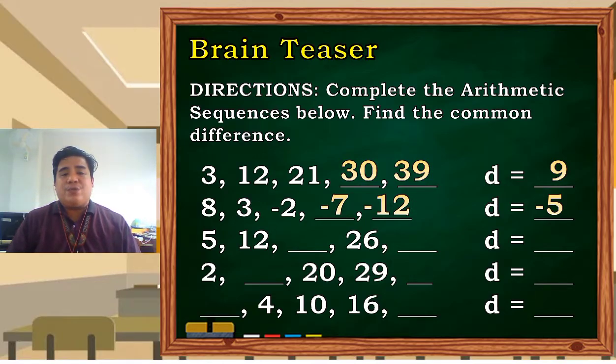Number 3: 5, 12, and then can you guess? 19, 26, and lastly 33. And what is our d? 7. We are adding 7 after every number to get the next one.